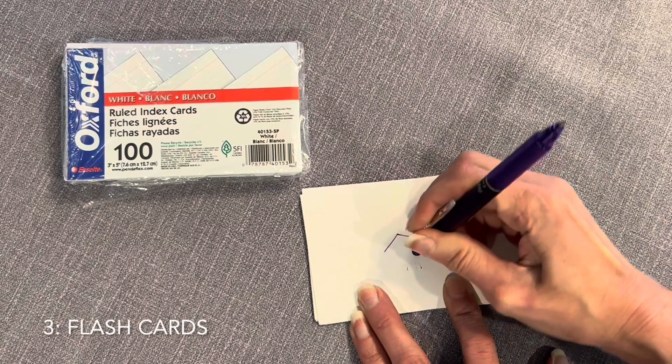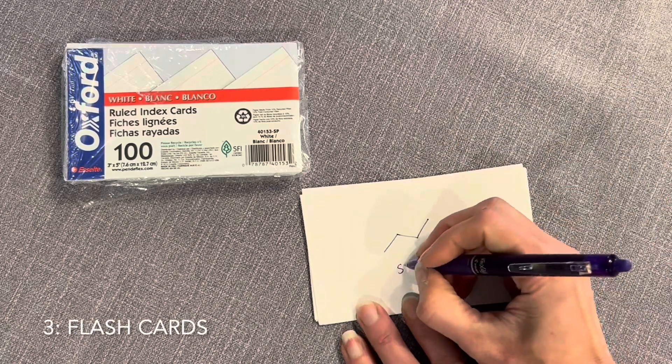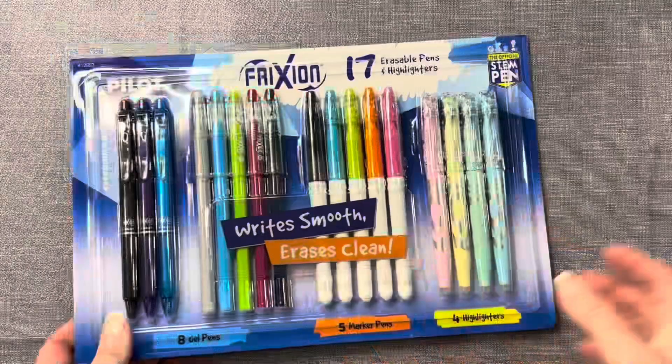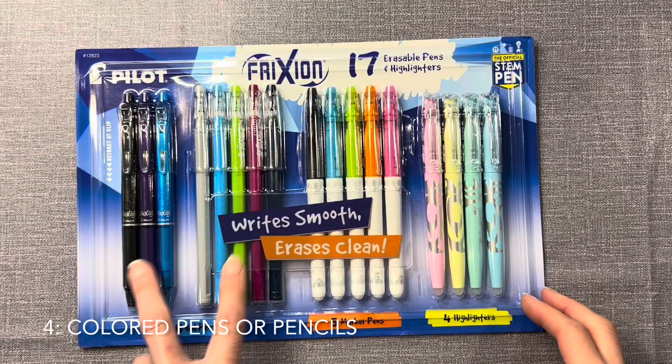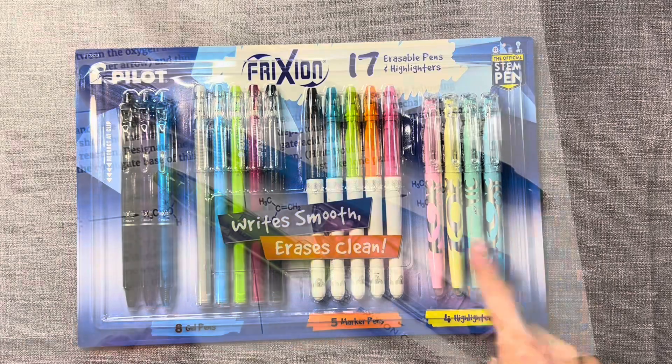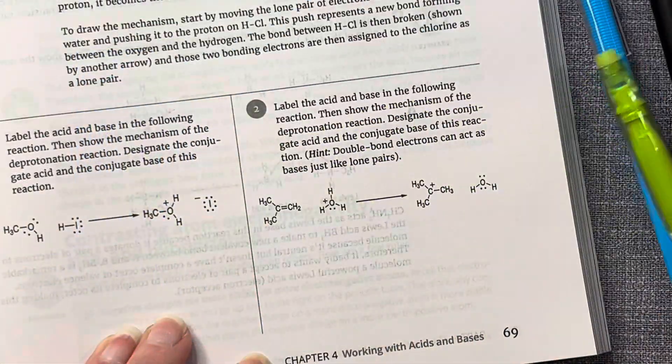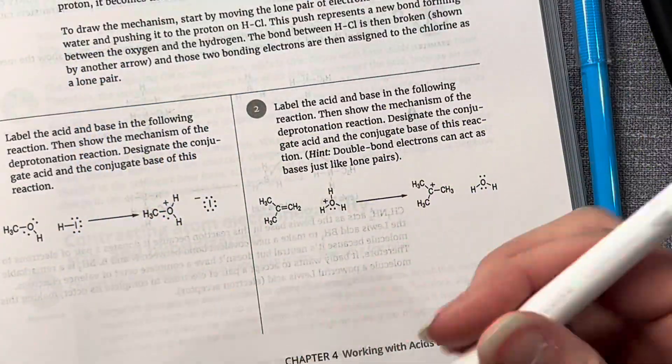And yeah, check out that erasable pen. That's the next thing on my list. Number four, colored pens or pencils. It's standard to write in a few different colors in organic chemistry. I personally am in love with Pilot Friction pens. So are most of my students.